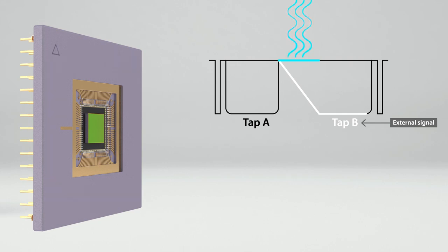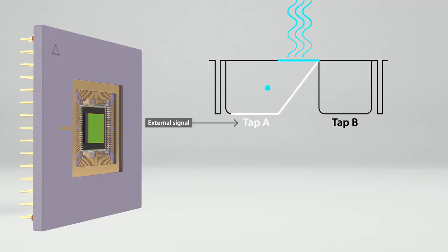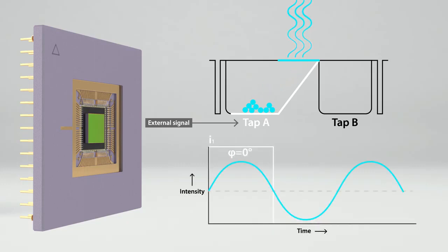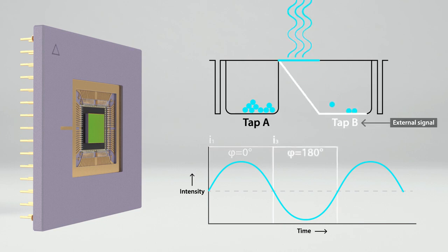At phase 0, tap A is active; all charge carriers are collected in charge bucket A. This is image I1. At phase 180, tap B is active and all charge carriers go to charge bucket B, resulting in image I3. This kind of charge swing enables the simultaneous record of I1 and I3 in the same camera exposure, creating a double image.